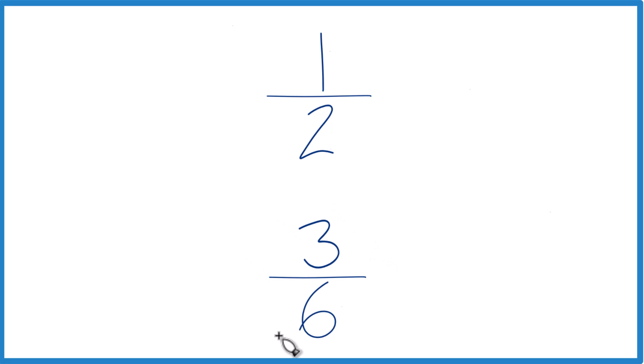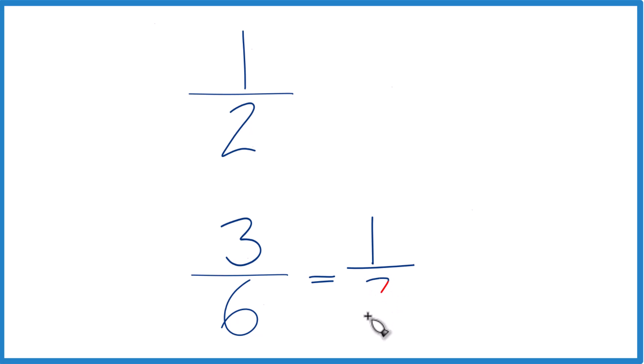We could also simplify 3 6, because 3 goes into 3 and 6, so we have a common factor. 3 divided by 3 is 1. 6 divided by 3, that's 2.